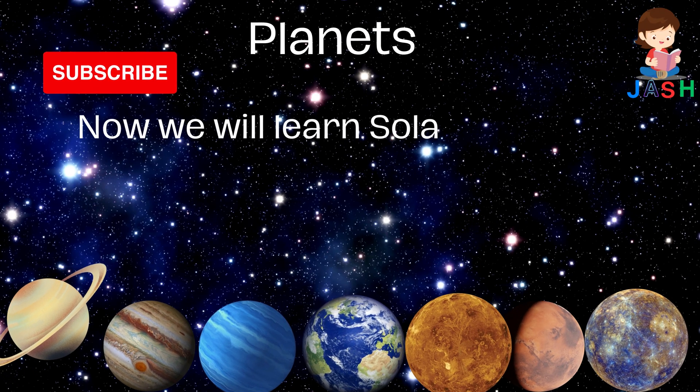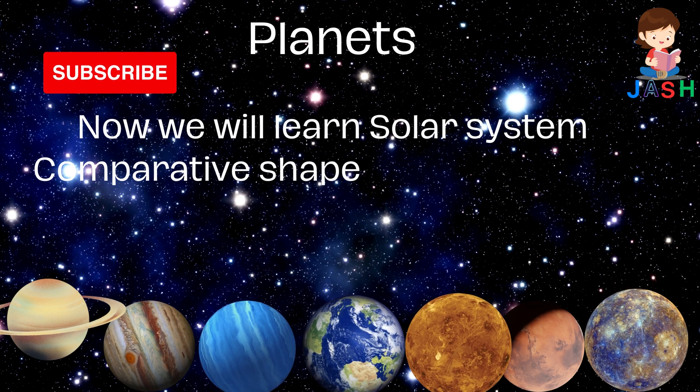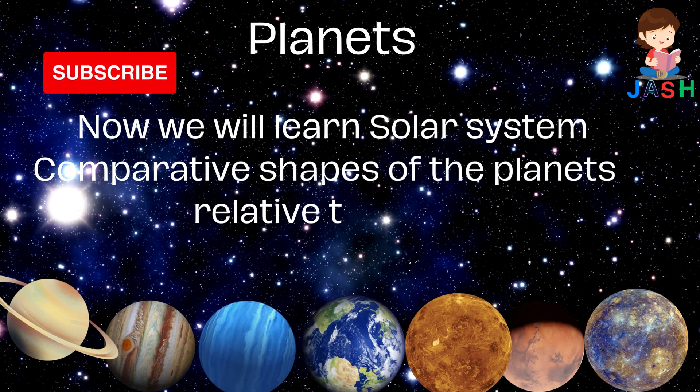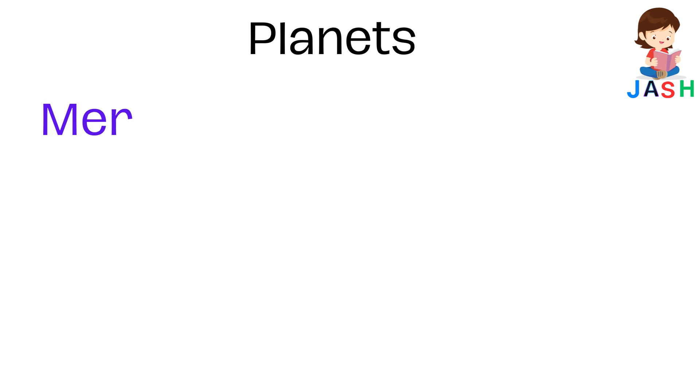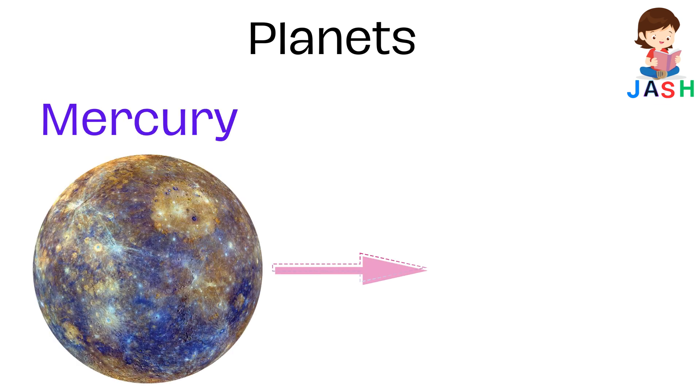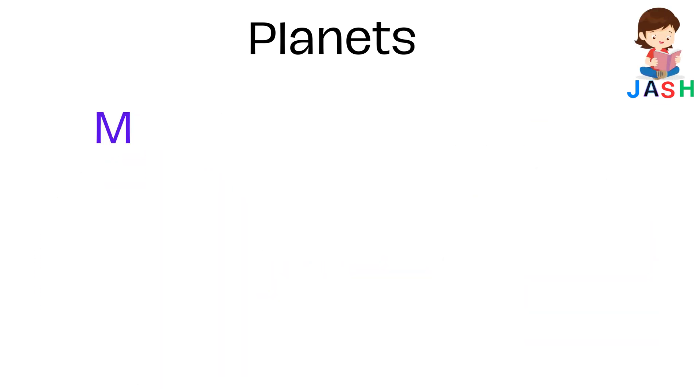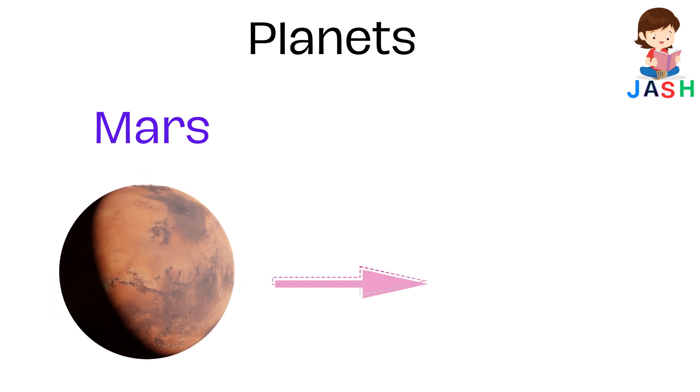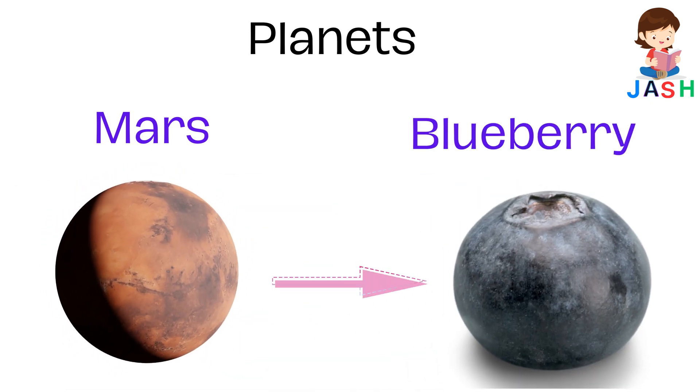Now we will learn solar system comparative shape of the planets relative to fruits. Mercury, shape is like peas. Mars, shape is like blueberry.